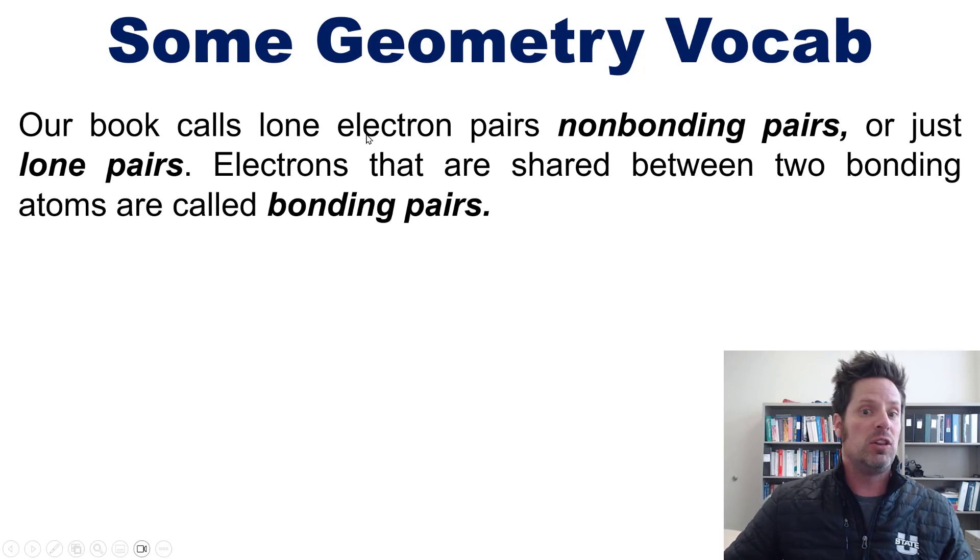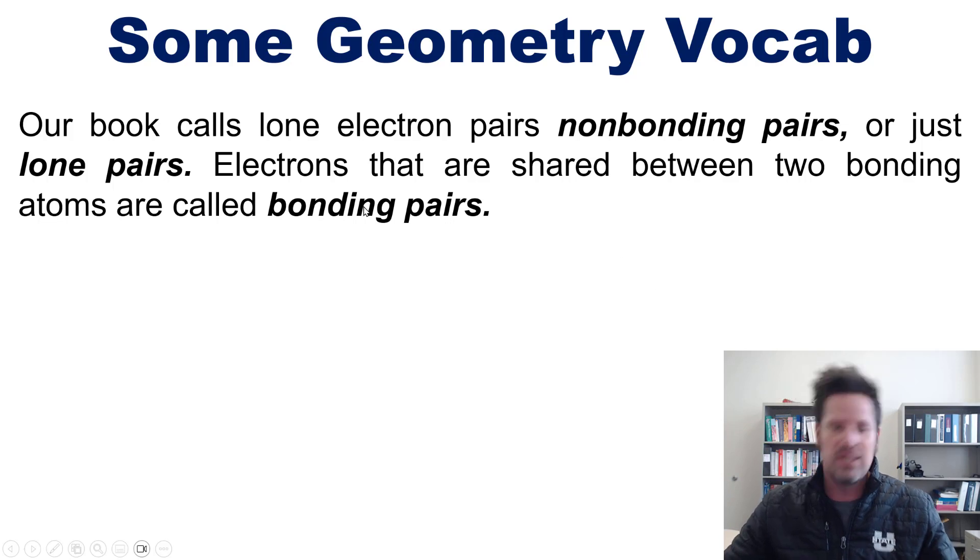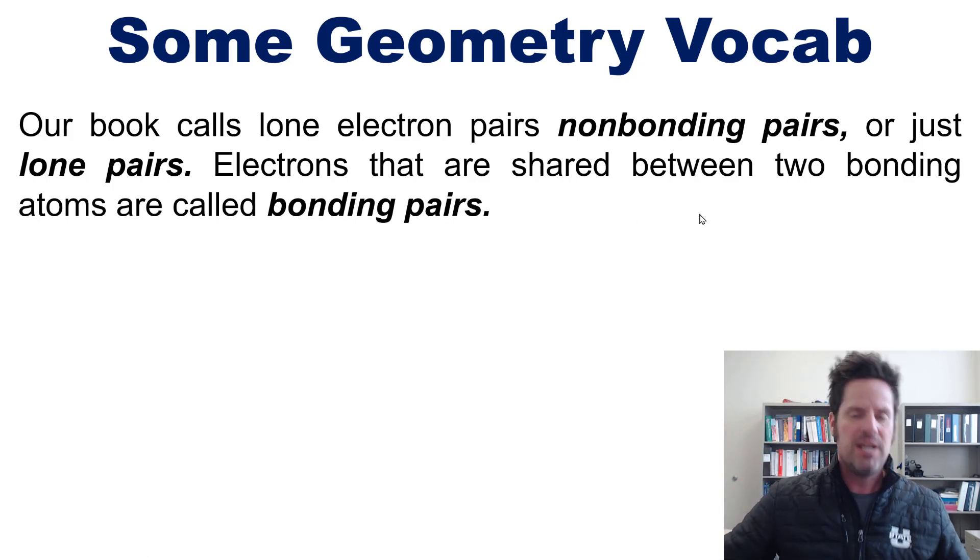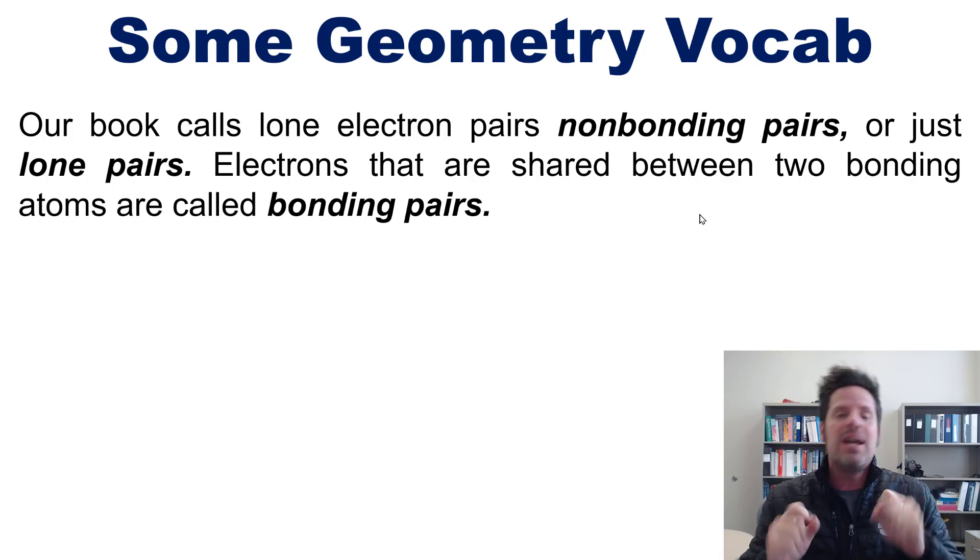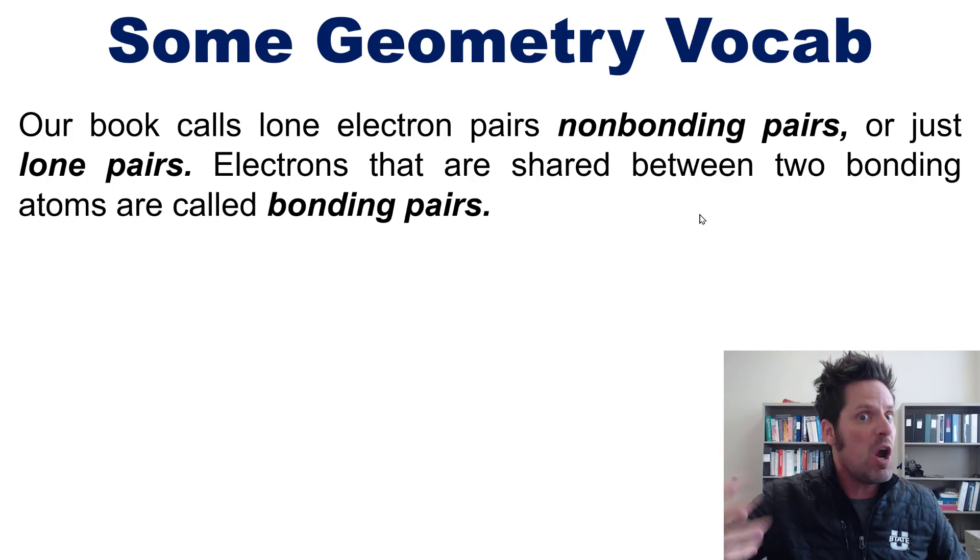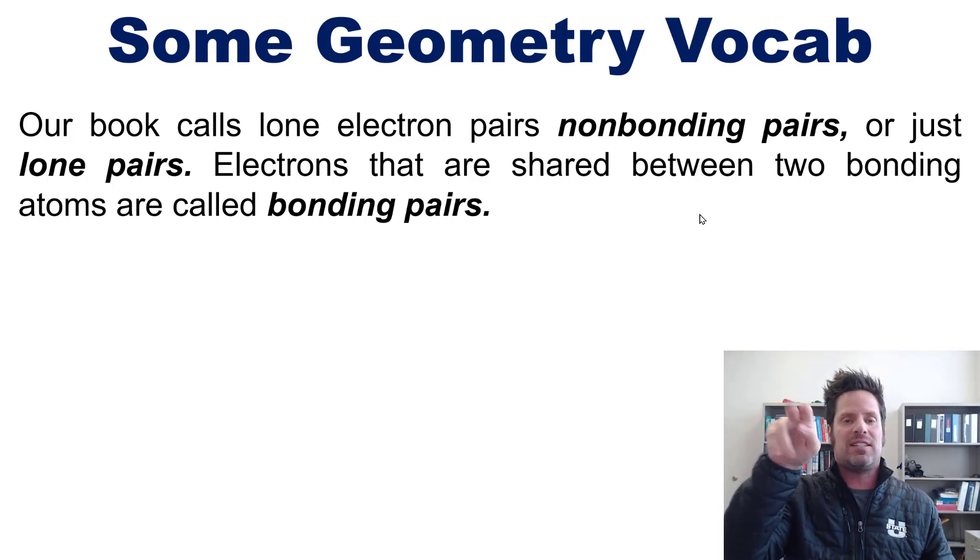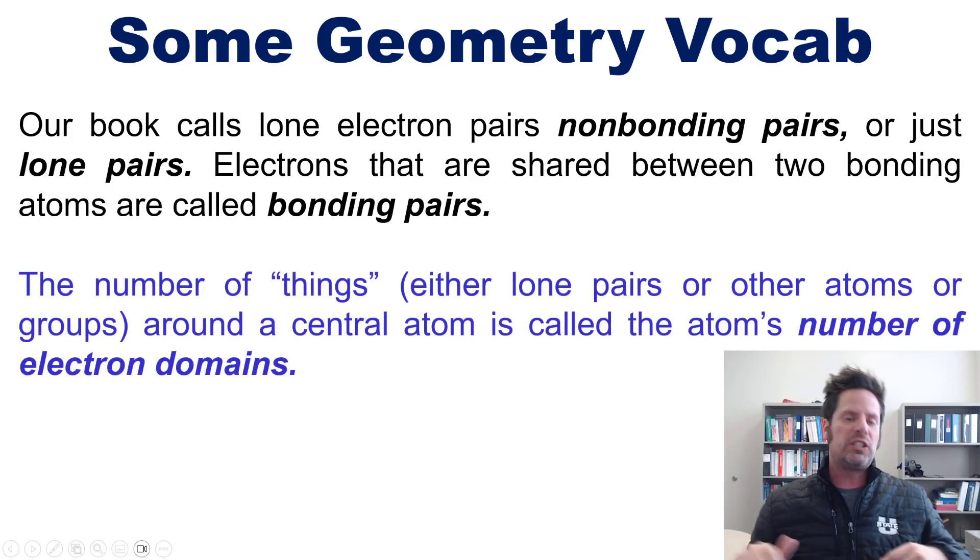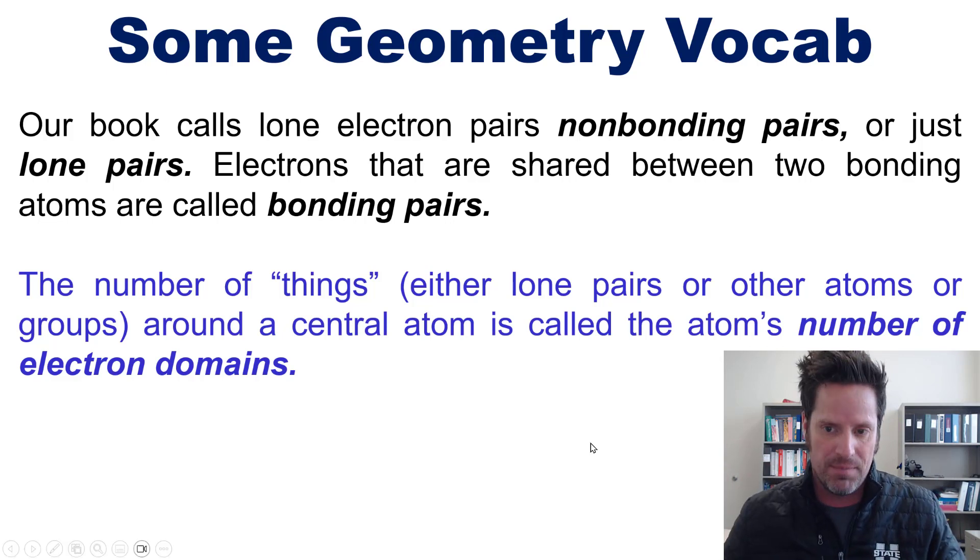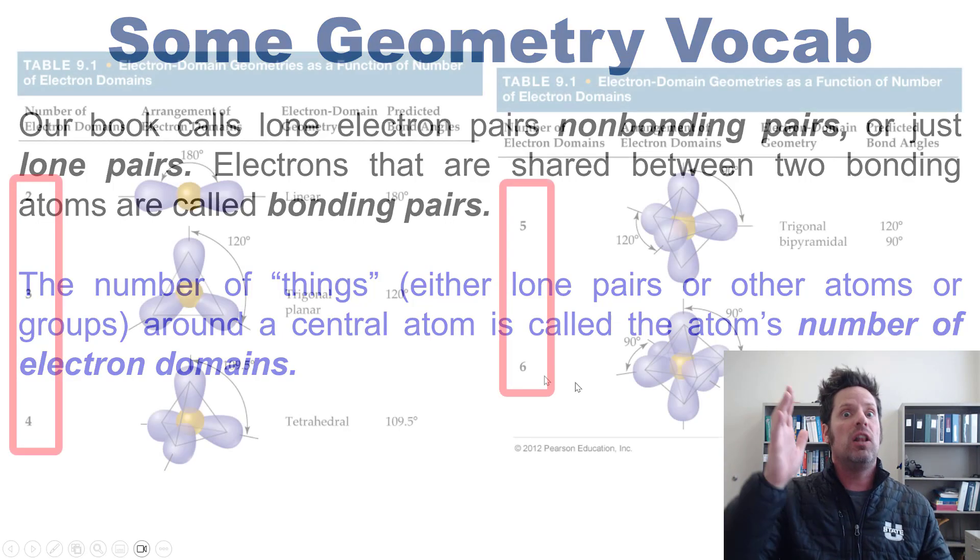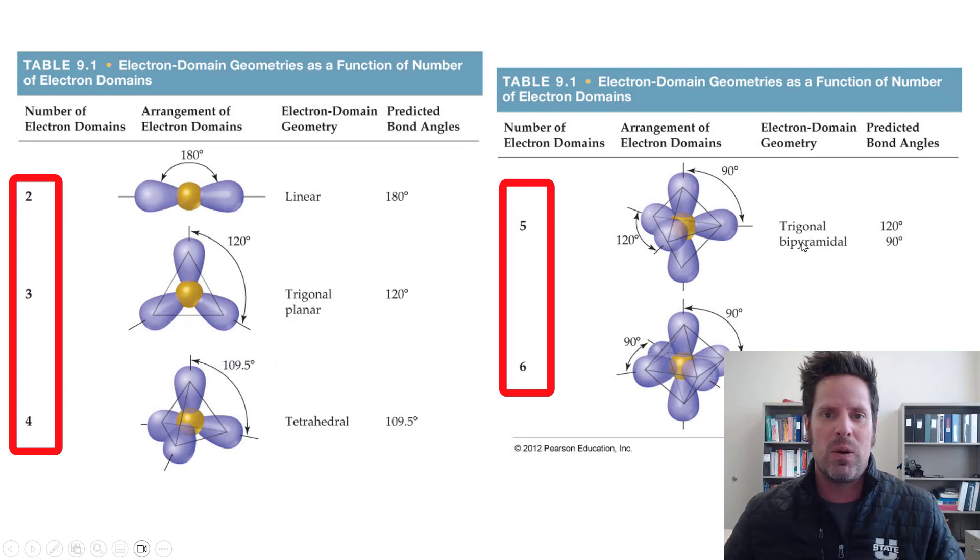Our book likes to call lone electron pairs, non-bonding pairs, or sometimes just lone pairs. These of course contrast with electrons that are shared between two bonding atoms. Those are called bonding pairs. So you have bonding pairs, those are essentially represented by a line or bond between two atoms in a Lewis structure, and non-bonding pairs, sometimes just called lone pairs, that are represented as dots on an individual atom. Now the number of things which could either qualify as lone pairs or other groups or atoms around a central atom is called that atom's number of electron domains, as I just kind of alluded to in table 9.1.